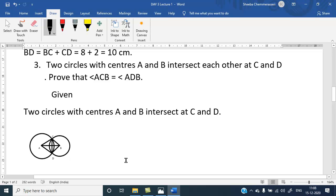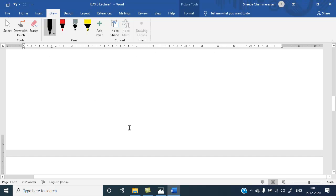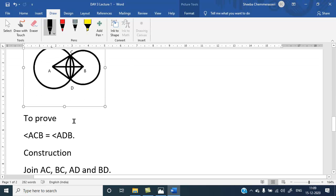Coming to the third question. Two circles with center A and B intersect each other at C and D. Prove that angle ACB equal angle ADB. So, what is given here? Two circles with center A and B. Two circles with center A and B intersected C and D. That is given.